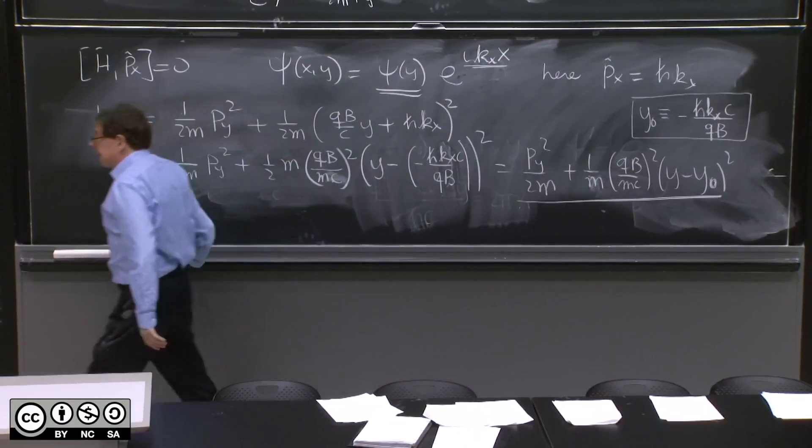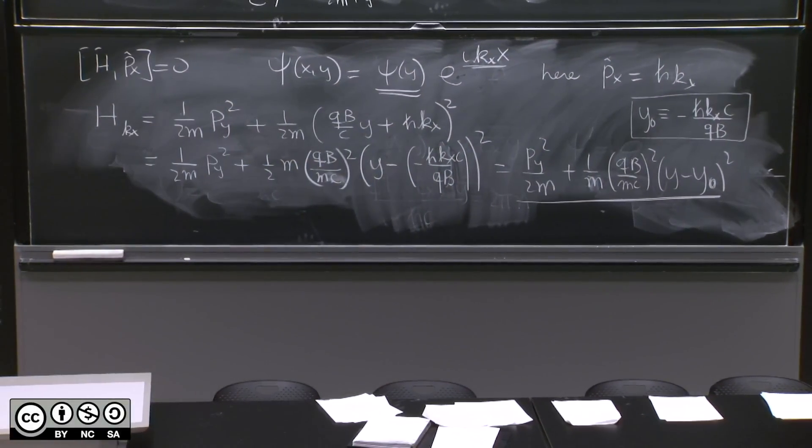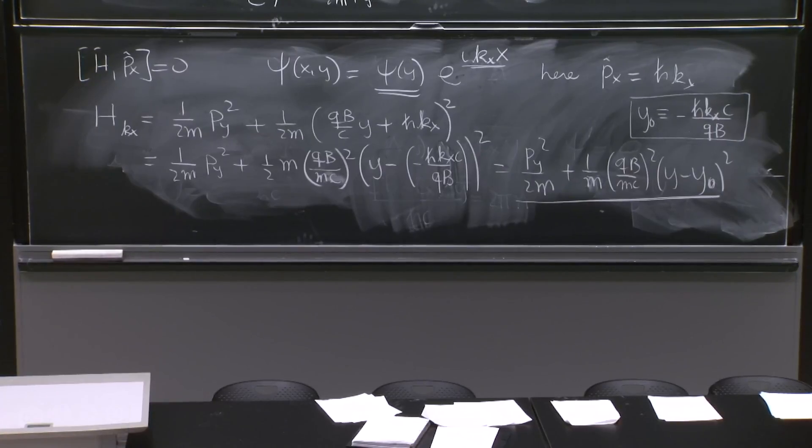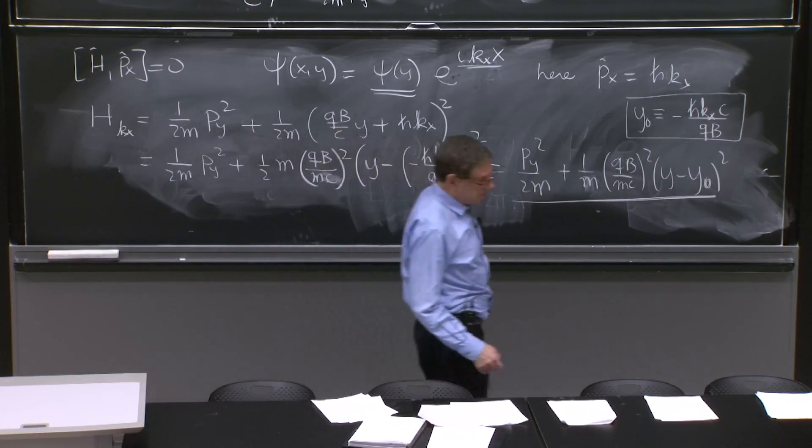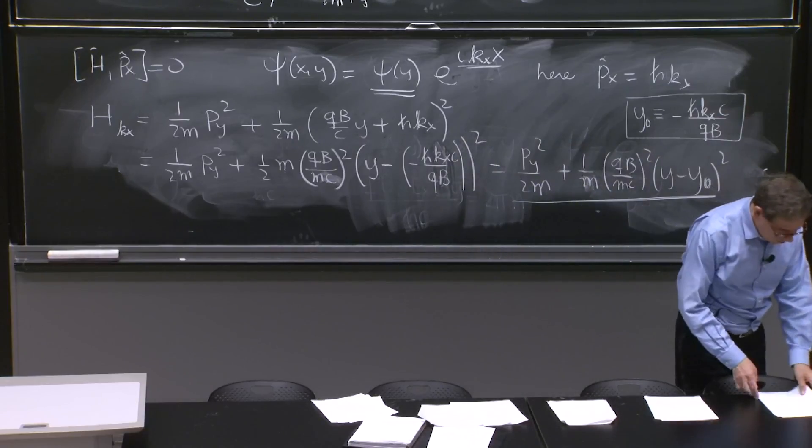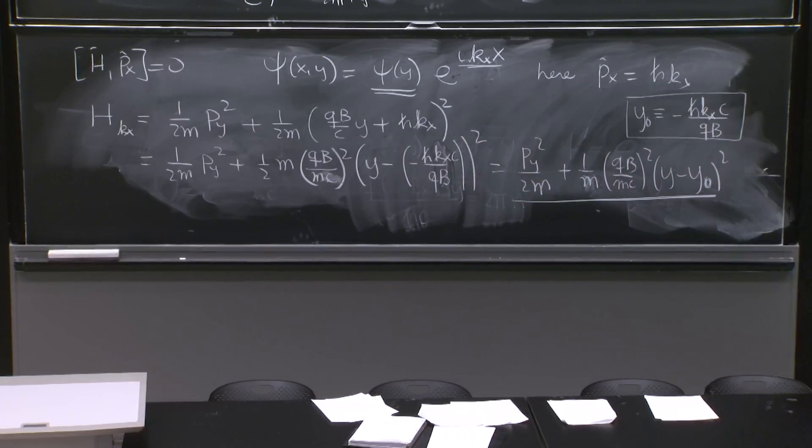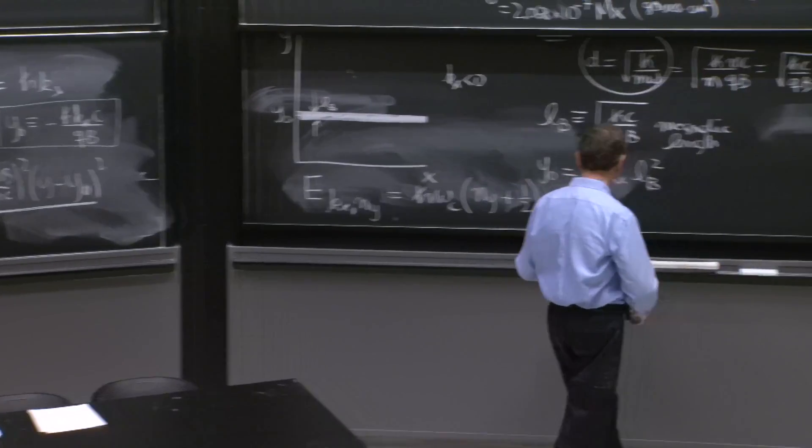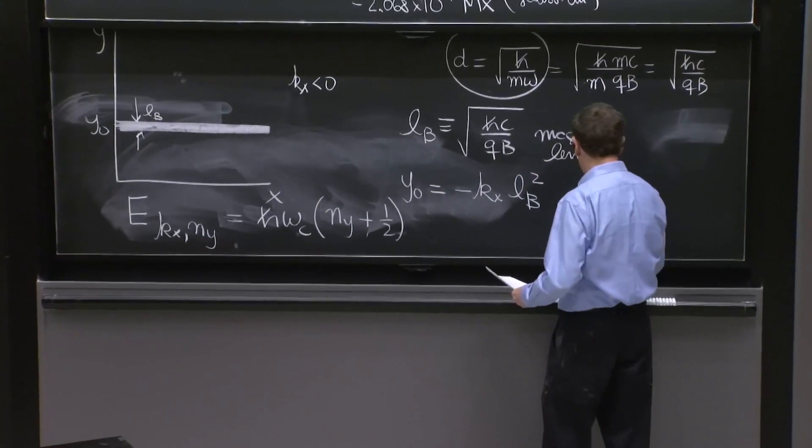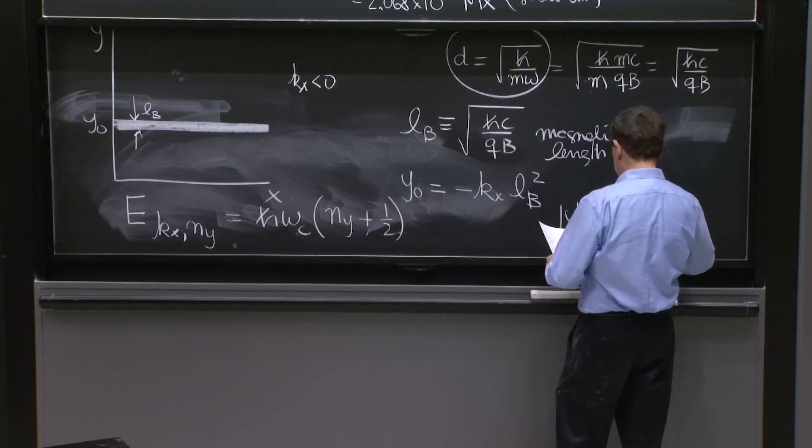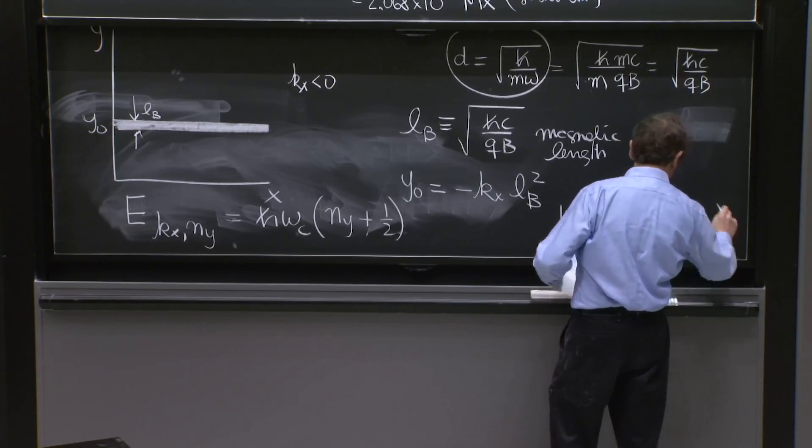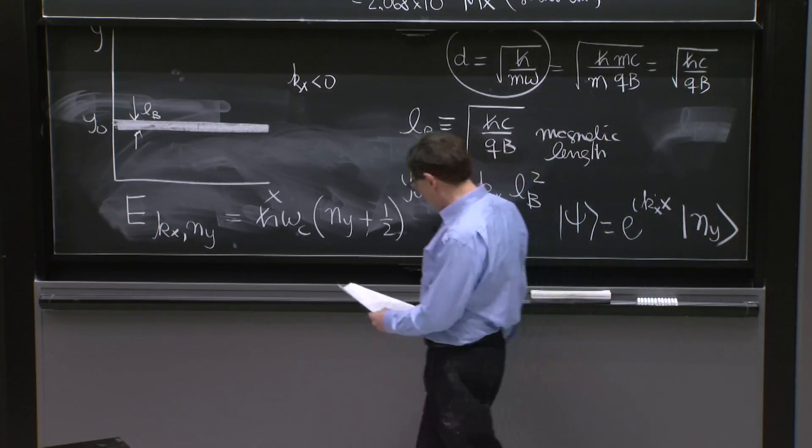So that's part of the story. Let's try to understand it a little better still. So what does the state look like? Well, the state looks like e^(ikx*x) times a state of the oscillator, n_y.